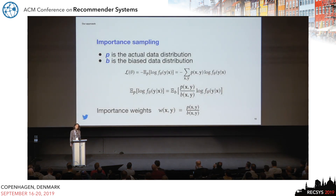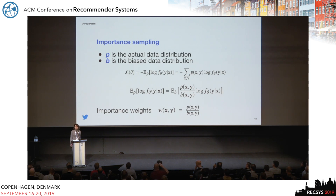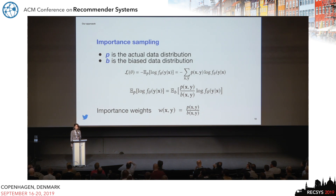In our approach, where we ingest all samples initially with a negative label, we essentially observe a biased data distribution B, which contains more negatives than the actual data distribution P. In order to correct for this, in our loss function we introduce importance weights, which account for the fact that we're now averaging over a different distribution that is biased.